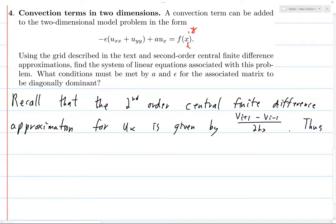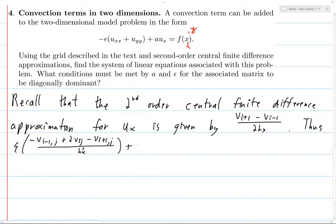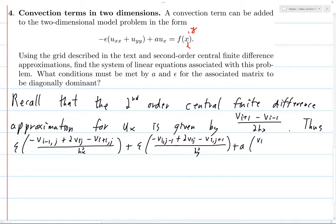Thus, we have the following system of equations. We have ε times our normal approximation of −u_{xx}, which is: −v_{i−1,j} + 2v_{i,j} − v_{i+1,j}, all over h_x squared. Plus ε times the same thing for the y values: 2v_{i,j} minus v_{i,j+1} minus v_{i,j-1}, divided by h_y squared. Then we add the advection term: a times v_{i+1,j} minus v_{i−1,j}, all over 2h_x.